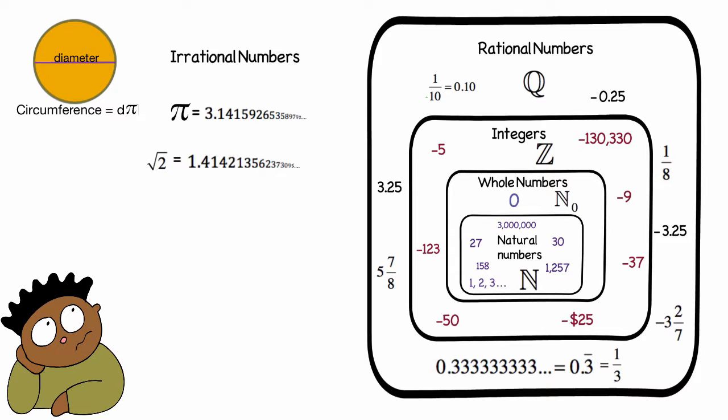Some other examples of irrational numbers are the square roots of any prime number, and something you might have heard of in art class, the golden ratio.